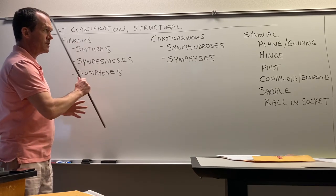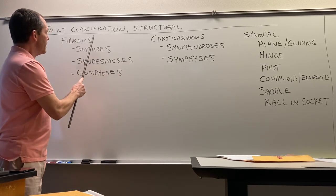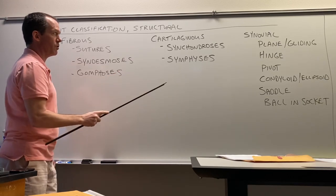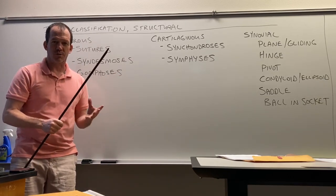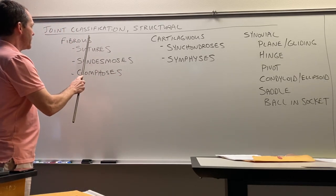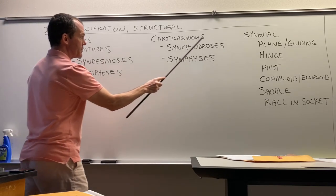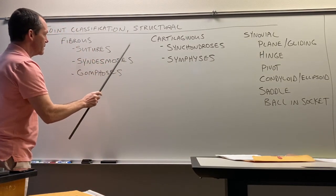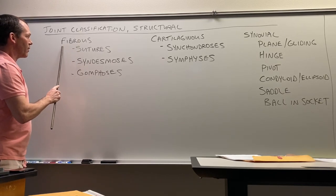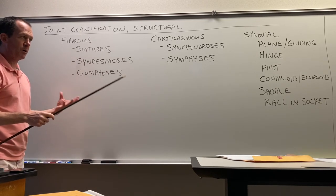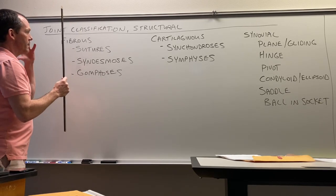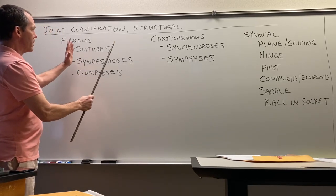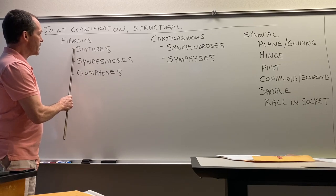I'm going to talk about how joints are classified. You may see that it says joint classification structural — so how they're built. If you see structural, think how they're built. There are three basic types of joints with their own subclasses. The first type are called fibrous joints. Think of it like how your house is built — it's made of wood, it's made of stone, whatever. This is what they're made of.